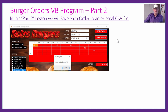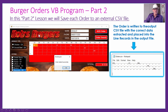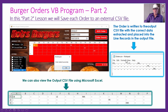Here's a preview: Jimmy D has ordered a burger, some fries, and a water bottle drink. That order gets written to an output CSV file — you can see all the items he ordered in the DataGridView, and they've all been written out as comma-separated values in the CSV file. We're looking at it in Windows Notepad.